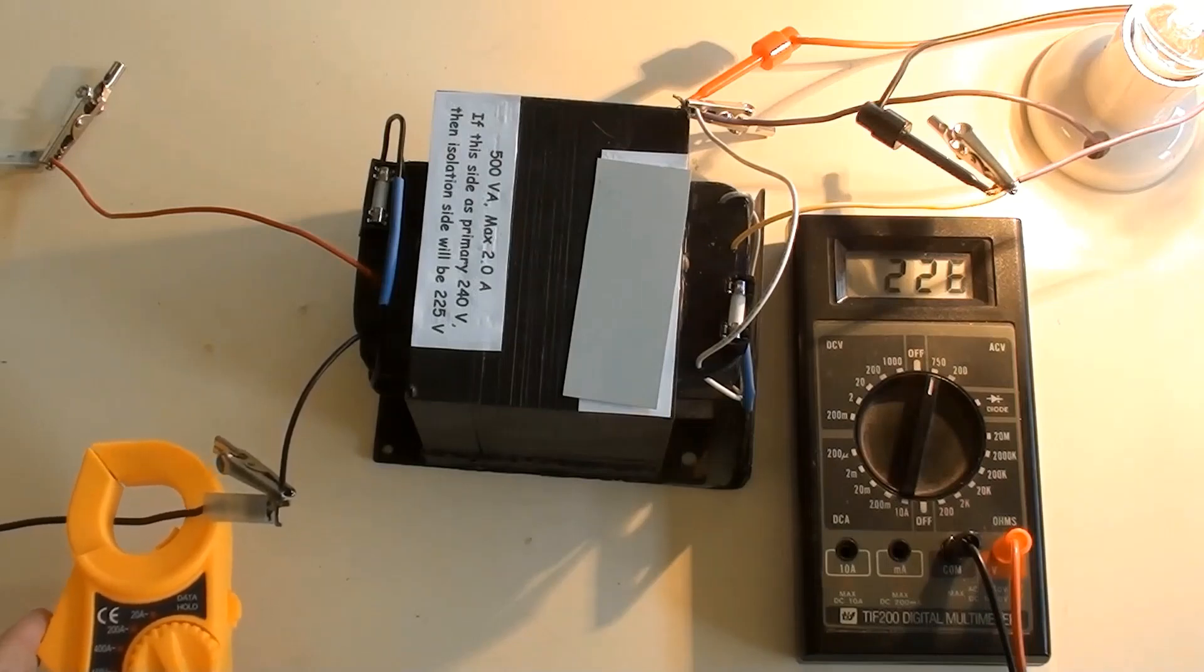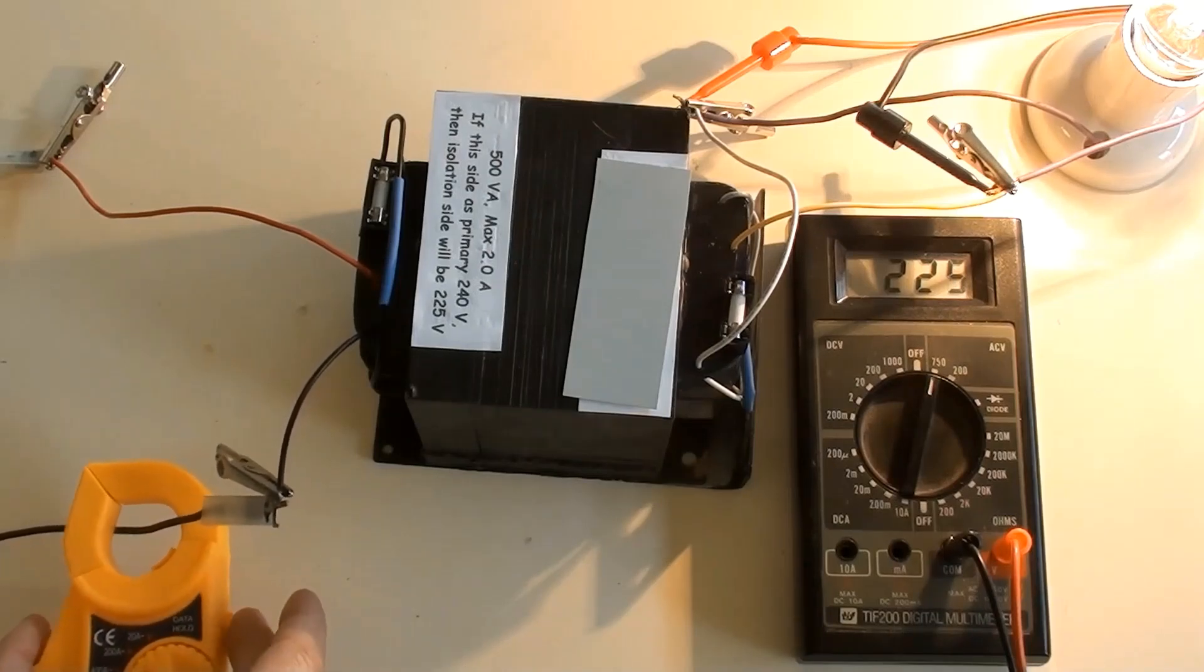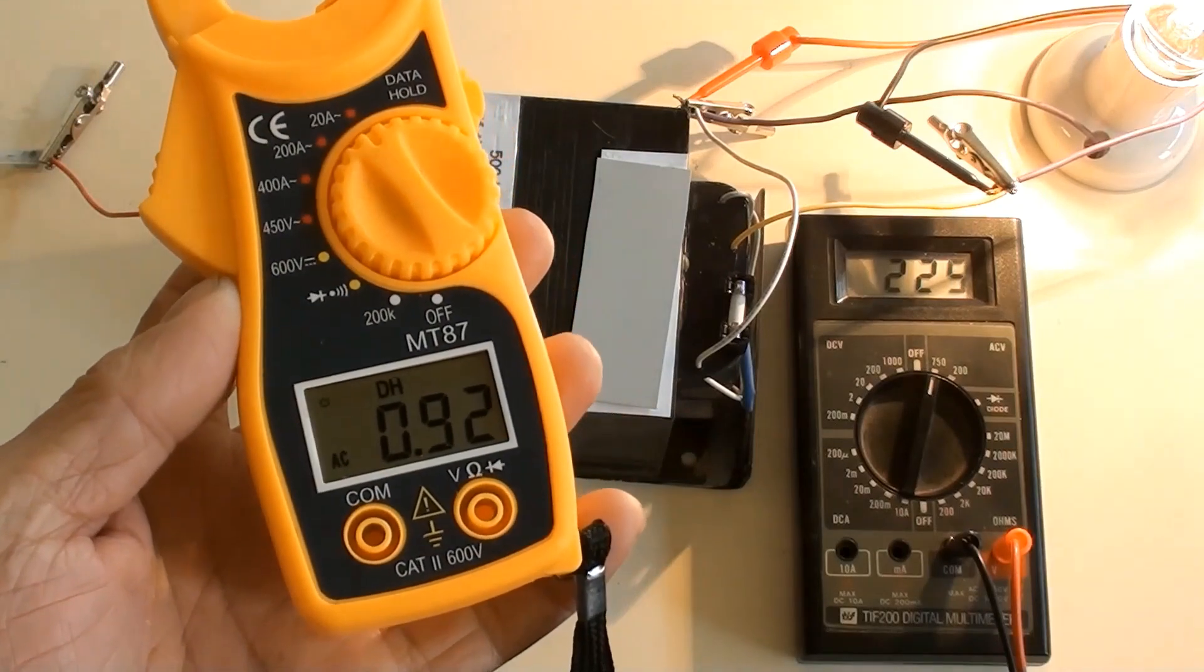And its current is 0.18 amperes. As primary voltage we have already known, 248 volts. Primary AC current is 0.92 amperes.